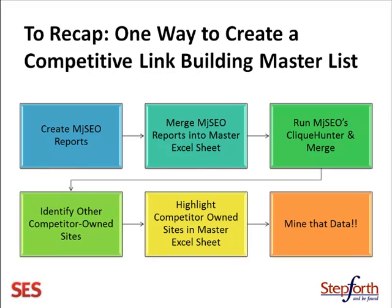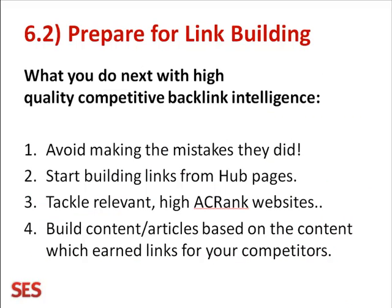To recap, that's the process we've just done: created the reports, merged them, identified some competitor-owned sites, and mined the data. What are we going to get from this? We're going to avoid making mistakes they did. We're going to start by building links from hub pages. We're going to go for the highest AC rank websites to get links from them. And we're going to build content or articles that were shown to provide the best link bait — that's the kind of articles your competitors succeeded well with in getting links.